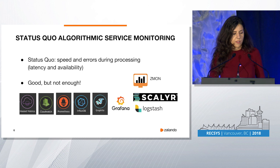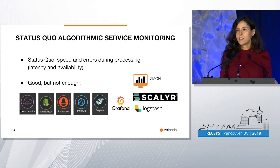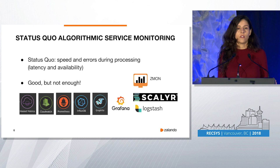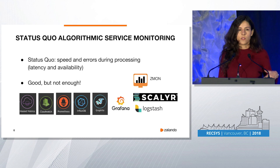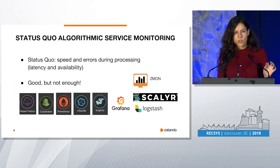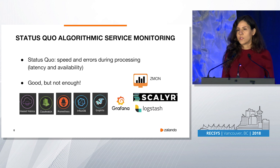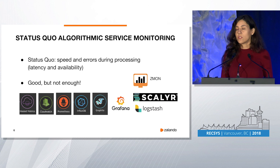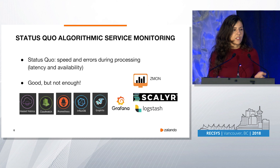How do we currently monitor algorithmic services? Well, mostly like any other service — we focus on speed and we focus on errors that occur during the processing of our recommendations, so basically latency and availability. Here you see a few tools, probably some of you already use those tools — they're pretty good, you can see them in any operational book. But they're not enough. Just answering successfully doesn't tell us that it was a good answer.